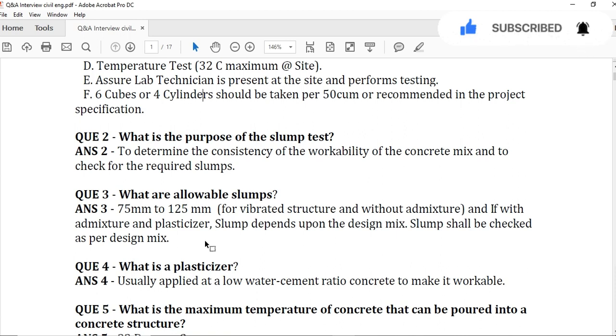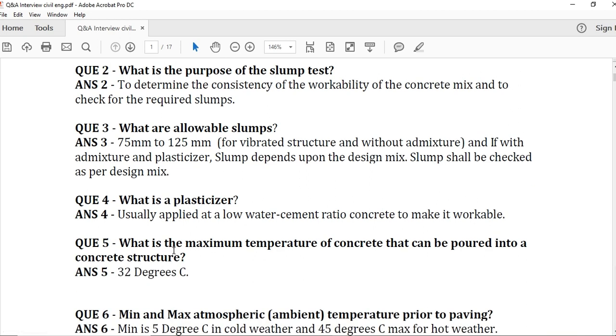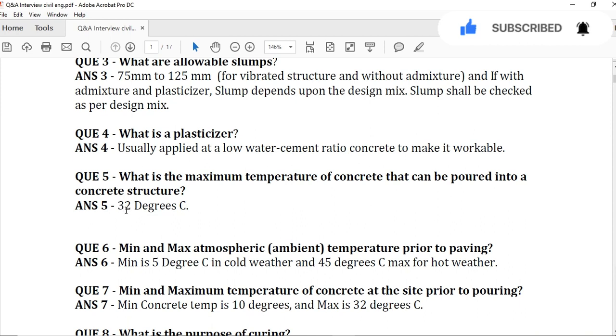So at that time, we apply it or we add plasticizer to increase the workability of concrete and place the concrete easily. Question number 5: What is the maximum temperature of concrete that can be poured into a concrete structure? Maximum temperature of the concrete is 32 degrees centigrade generally, but on sites, till 35 degrees centigrade, it's allowable.